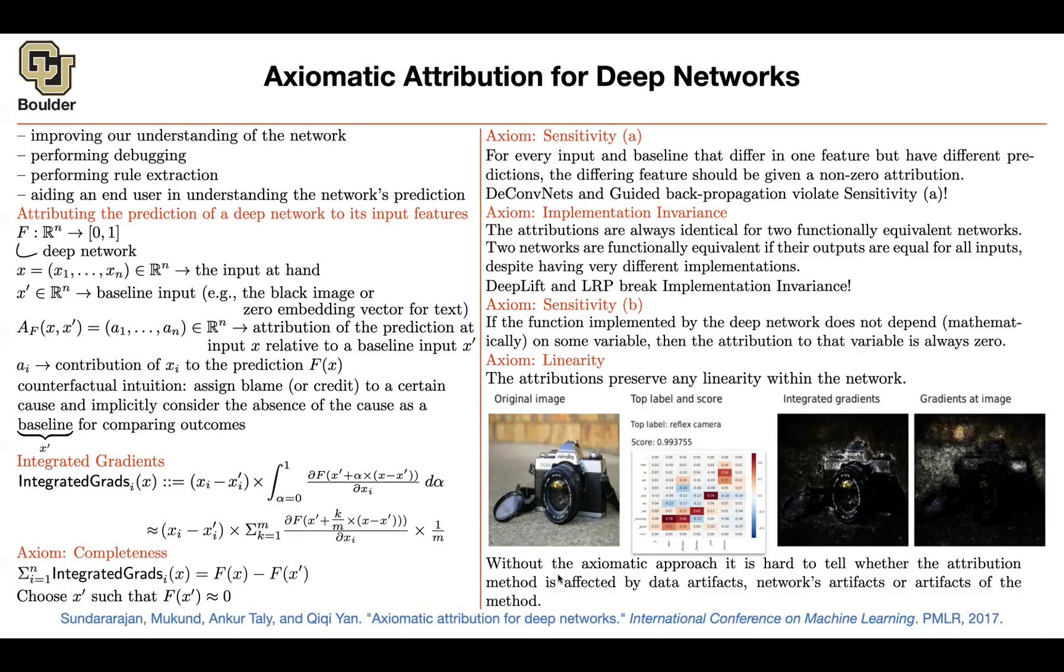Another reason why you're going this axiomatic approach is that in the end of the day, you want to debug. You want to debug your data, you want to debug your neural network using a method. And the predictions of your model could be wrong for a particular data because something is wrong with your data. There are some artifacts in your data. Maybe there are some artifacts in your neural network.